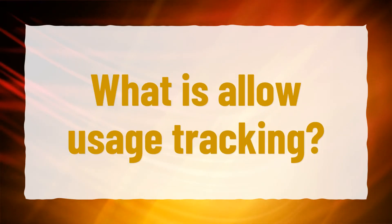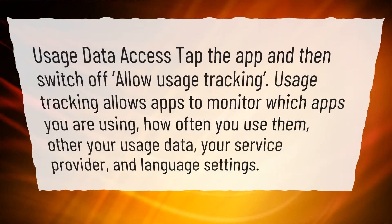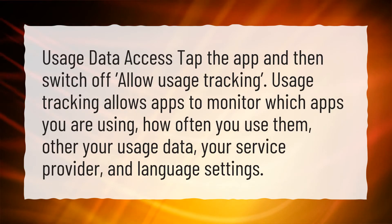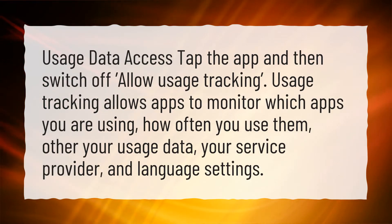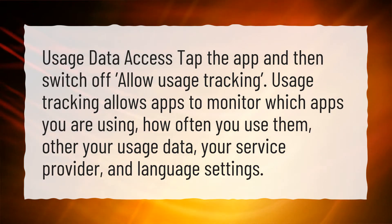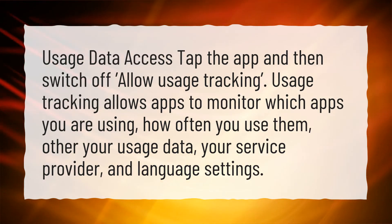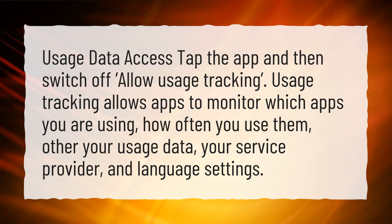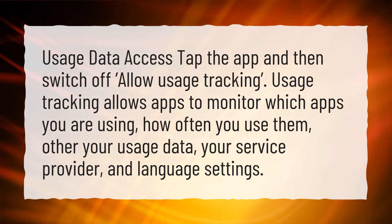What is Allow Usage Tracking? Go to Usage Data Access, tap the app, and then switch off Allow Usage Tracking. Usage Tracking allows apps to monitor which apps you are using, how often you use them, your other usage data, your service provider, and language settings.